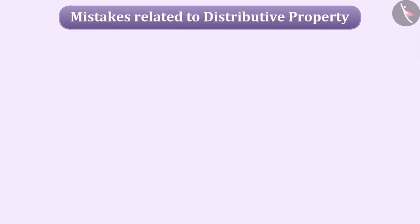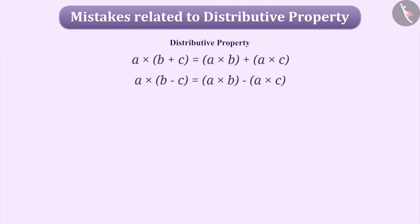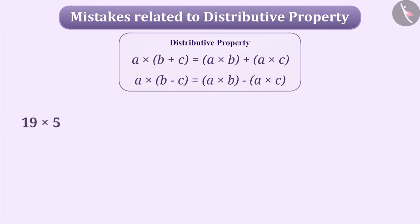Let's look at a few common mistakes related to the distributive property of integers. Some kids do not use the distributive property to make the multiplication easier. For example, if you have to solve 19 multiplied by 5, some kids will just multiply 19 with 5. They do not understand that they can make it easier by using the distributive property.